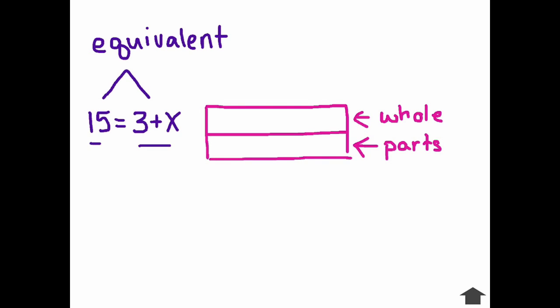So let's identify the parts of this equation. Our whole is 15. So this bar up here on top is equal to 15. Next, our parts. Well, I have 3 and x. I know 3 is kind of small, so I'm going to make my line for it right here. And I'll label this 3 and then the rest of this is going to be x.